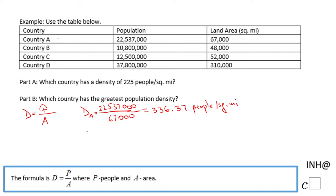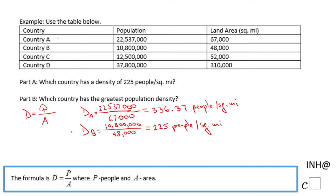For country B, we have 10,800,000 divided by 48,000. Putting that into the calculator, we get exactly 225 — 225 people per square mile. So we already have the answer to part a: country B is the country whose density is 225 people per square mile.